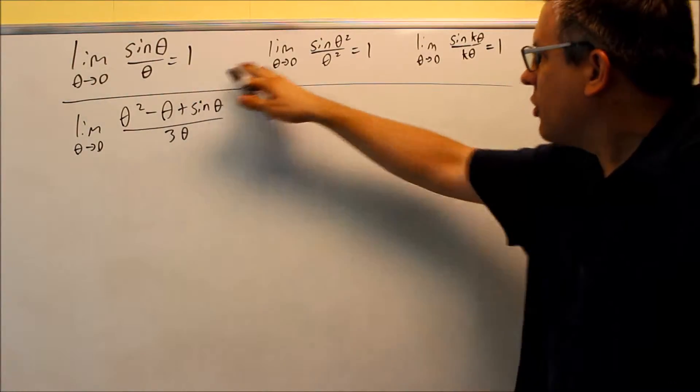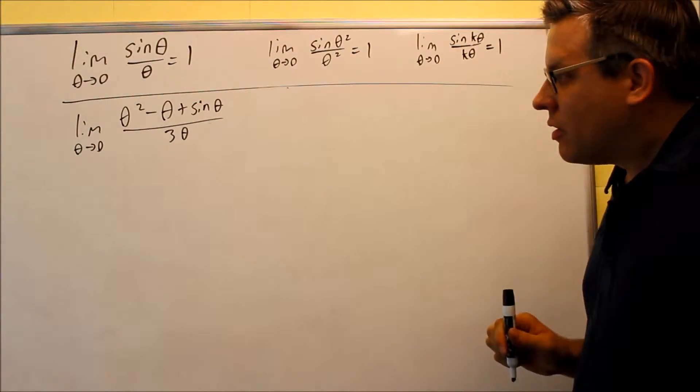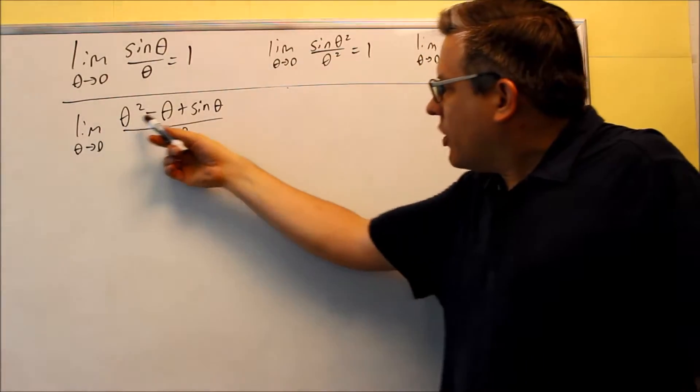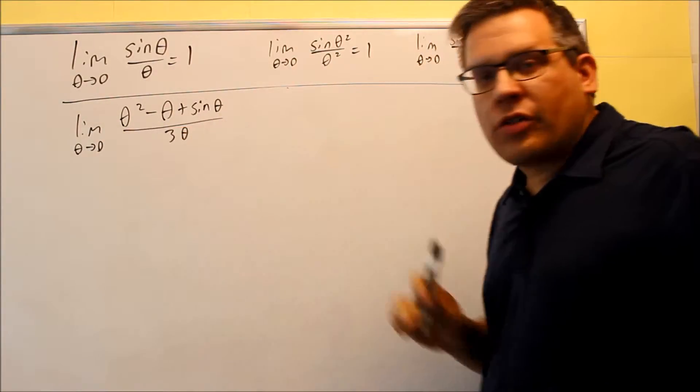Okay, here's another one where we're going to be using these special limits. Now for this, we see three different things on top and we have one thing on the bottom.